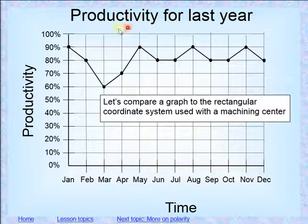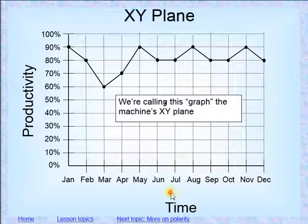So let's just, instead of this being a productivity chart, we're going to look at it like it's an XY plane with Cartesian coordinate systems. So, let's look at it here. We're going to change this to an XY plane instead of productivity.